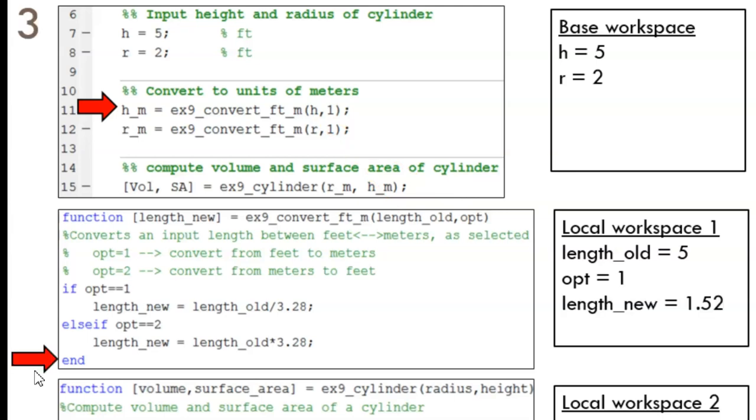After processing the if branch, length new is computed to be 1.52. We are now on the verge of leaving the function and returning back to the main script.